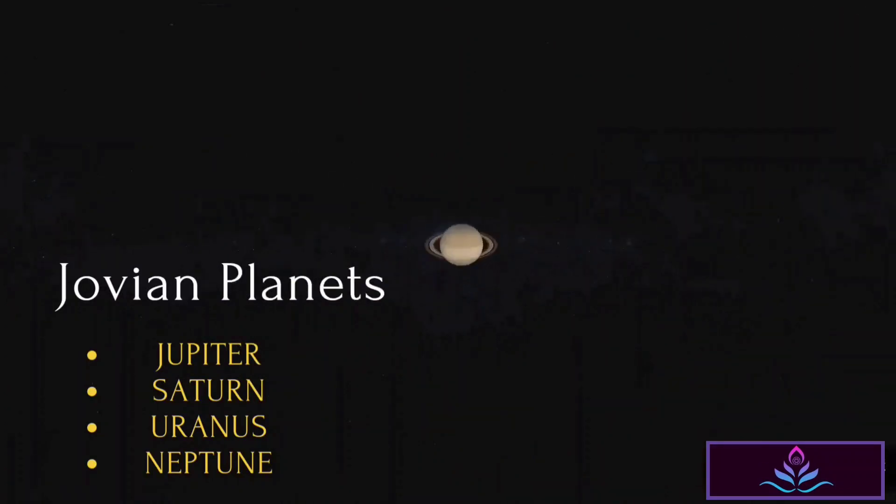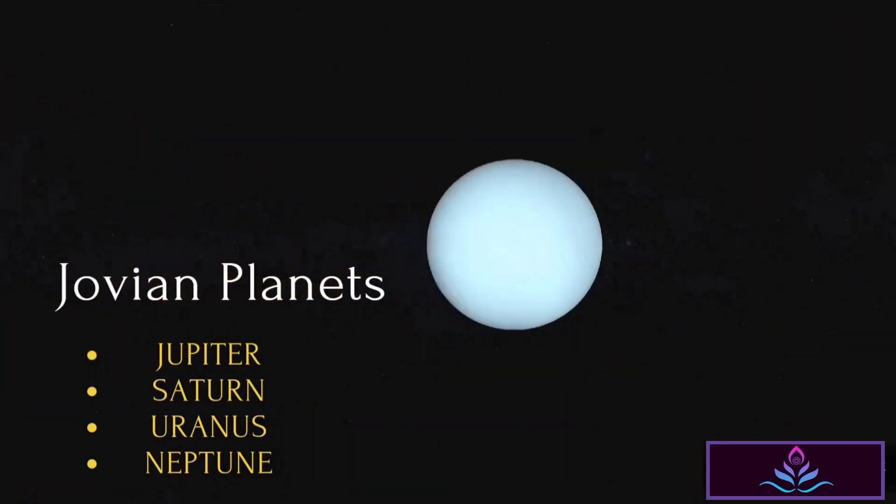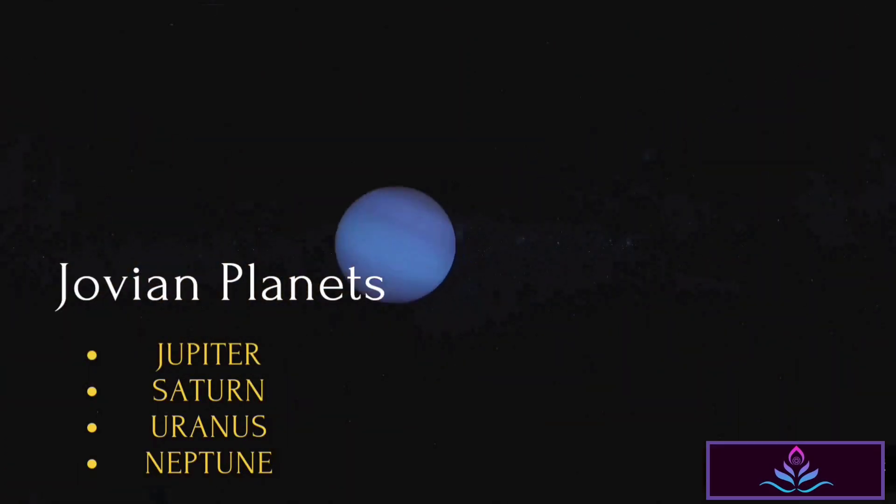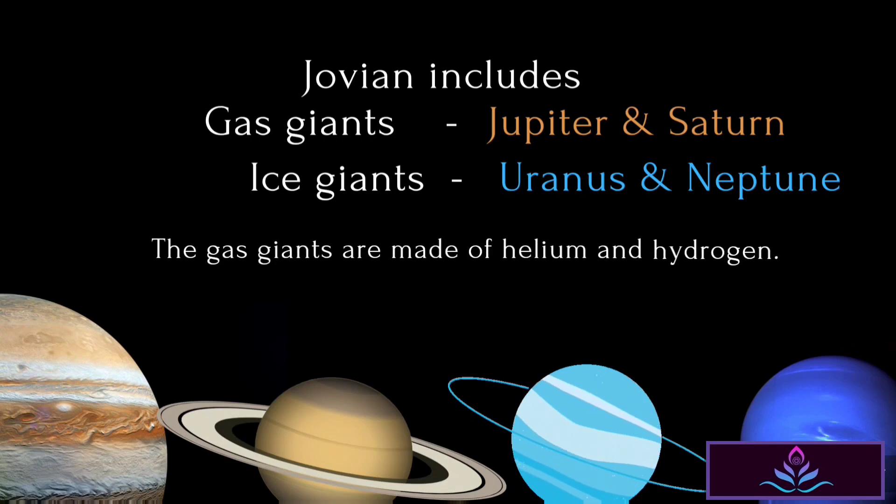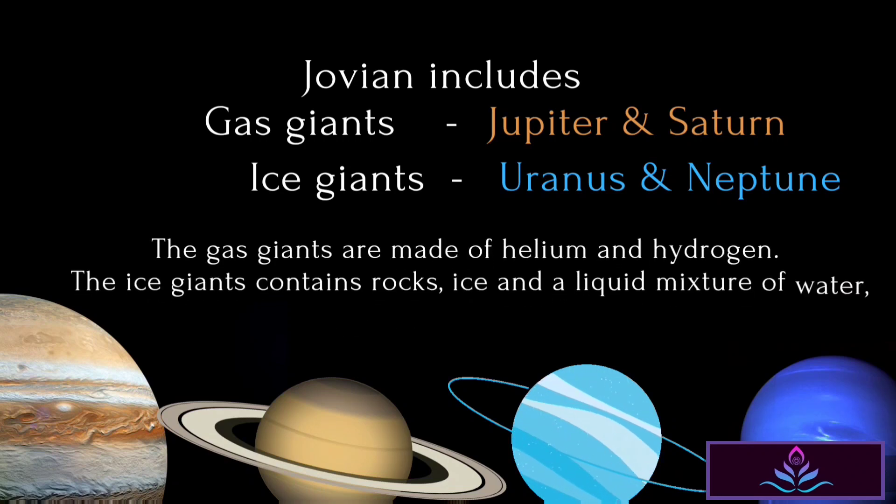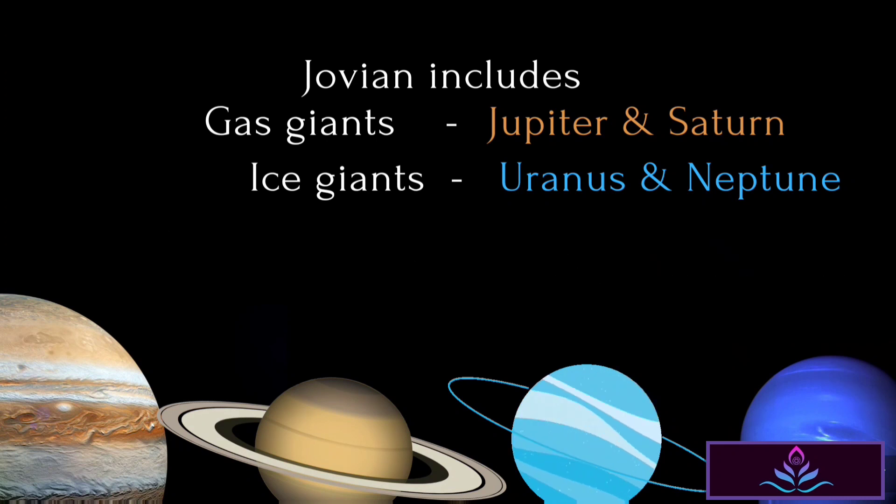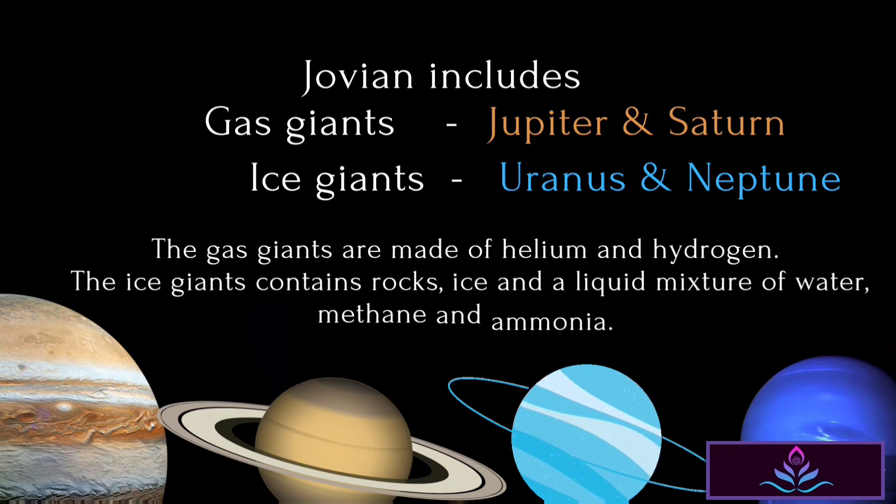Jovian planets include Jupiter, Saturn, Uranus, and Neptune. Jovian includes gas giants—Jupiter and Saturn—and ice giants—Uranus and Neptune. The gas giants are made of helium and hydrogen. The ice giants contain rocks, ice, and a liquid mixture of water, methane, and ammonia.